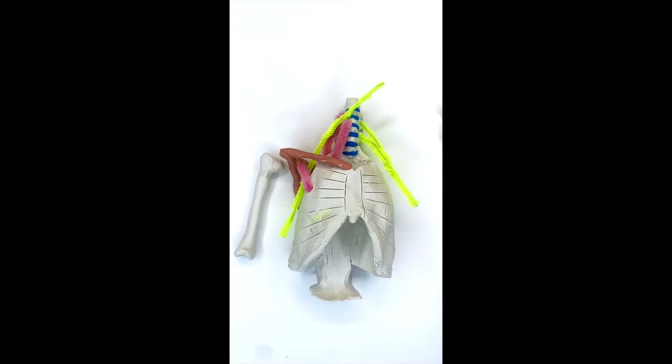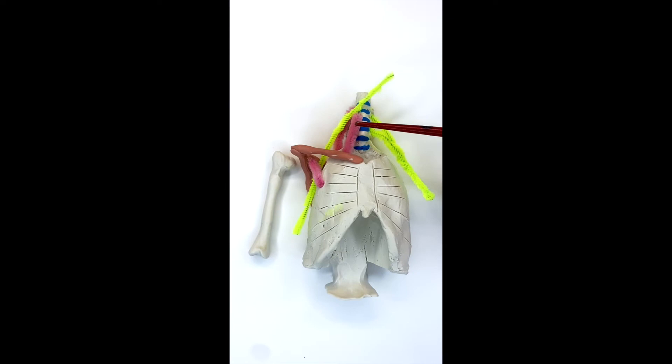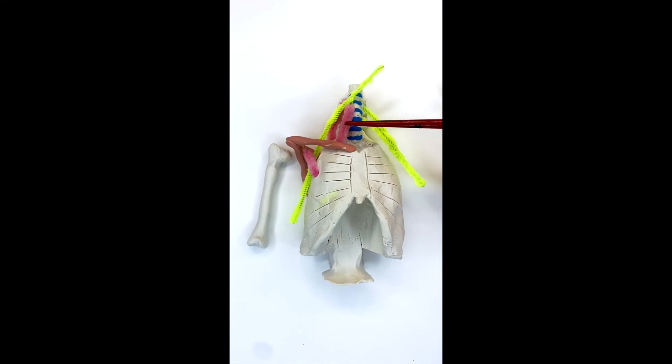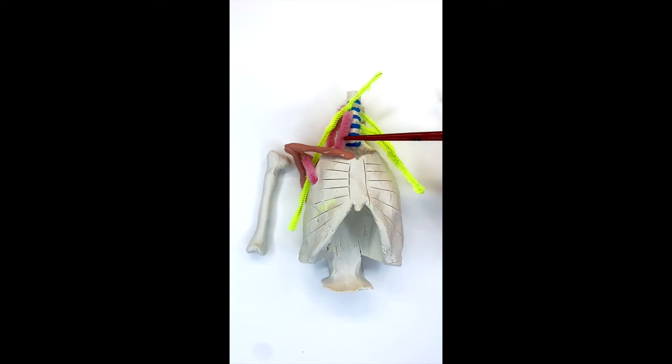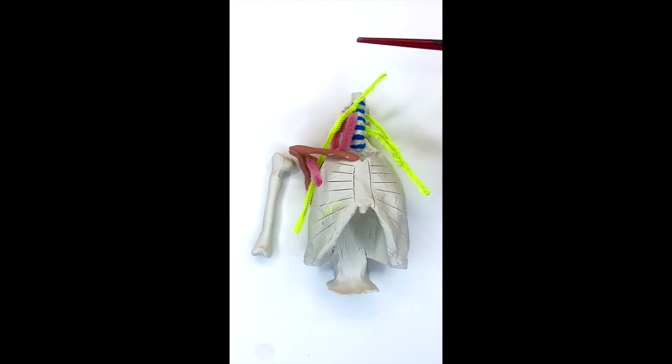So if these muscles get tight, the scalenes, what that looks like is if your head is kind of pulled forward and down, or if you've had some injuries to your neck, these may get really tight. Or if you breathe improperly, they also might get really tight because they help elevate the top of the rib cage. Or if you have lung problems, these muscles can get tight and compress this nerve there, this nerve bundle.